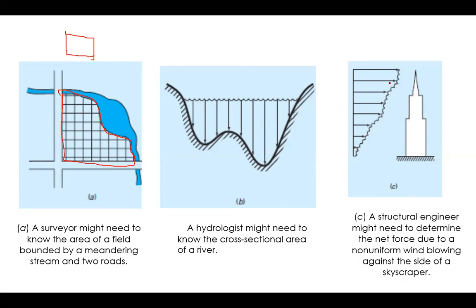The wind pressure variation is very irregular, and it is very difficult to find the total force acting on the structure. Sometimes the position of the resultant force is also required. So how do you calculate the total area — from the land plot, the river cross-section — and the total wind force on the structure?